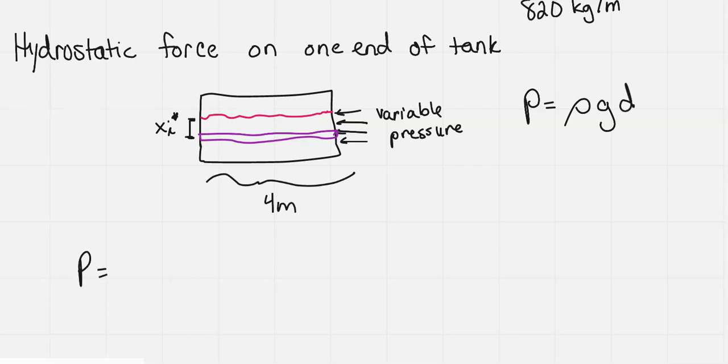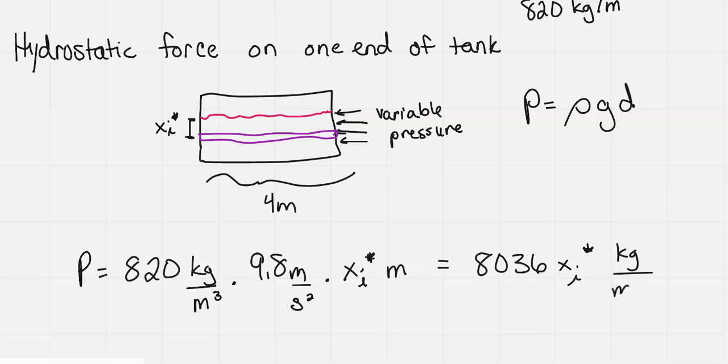So the pressure would be equal to the density, which for kerosene is 820 kilograms per meter cubed, times gravity, which is 9.8 meters per second squared, times the depth, which we don't know, we're just calling it x sub i star, and that's in meters. So again, put your units on. And so if we work out those numbers, we get 8,036 x sub i star, and the unit is pascals, but I like writing it out, so I'm going to put kilograms per meter times second squared, and that's a pascal unit.